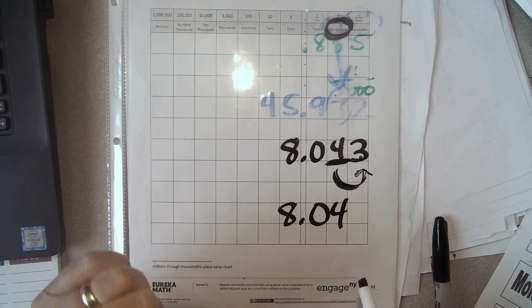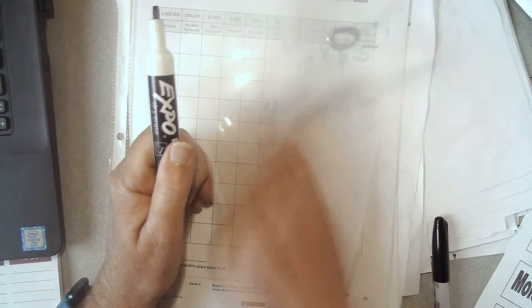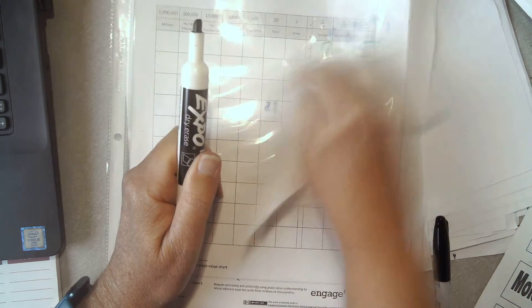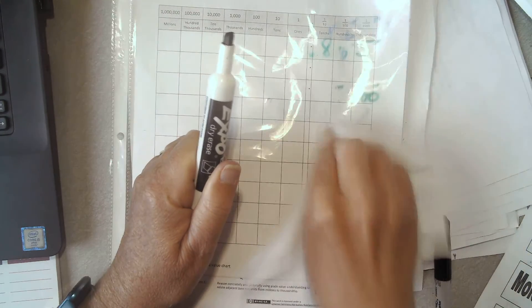Austin, are you with us? Next problem says write 7 hundredths in standard form. Well, I can also use my mat again. Mat, 10 points for your team for my constant forgetting.